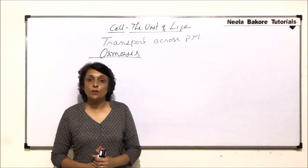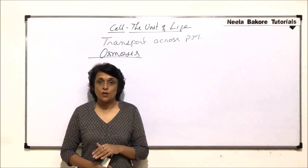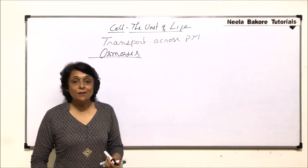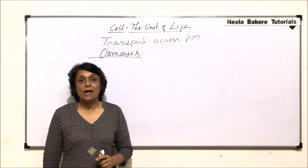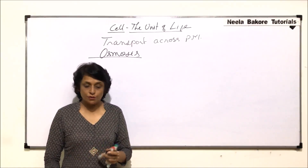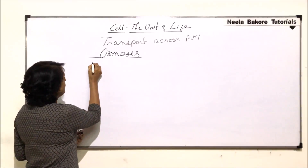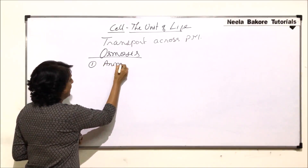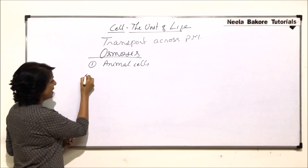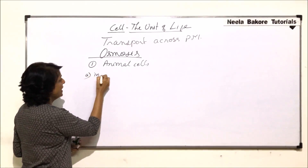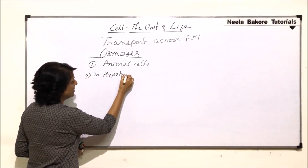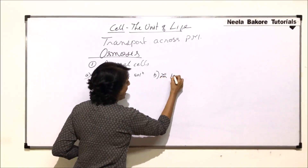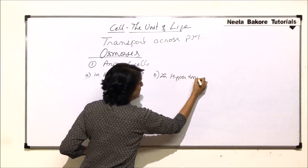In the previous part we understood how osmosis, that is the movement of water, takes place. Now we would see if animal cells and plant cells are placed in hypo and hypertonic solutions, what is going to happen. The first situation we are talking of is animal cells placed in two situations: a hypotonic solution and a hypertonic solution.